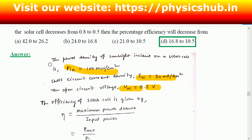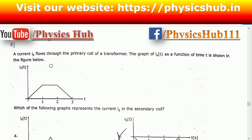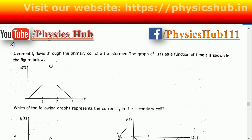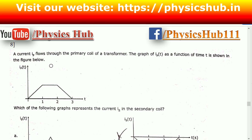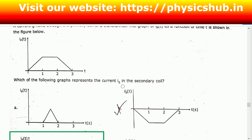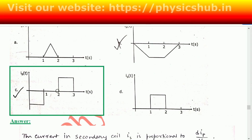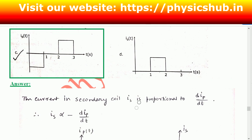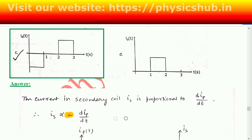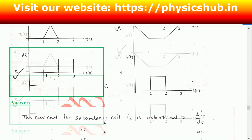Question number eight: a current Ip flows through the primary coil of a transformer. The graph of Ip as a function of time t is shown in the figure. We have to find out the current in the secondary coil. The current in the secondary coil is proportional to dIp/dt, with a negative sign.